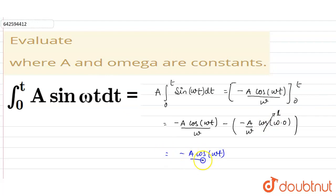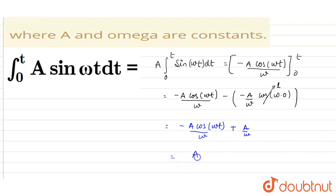plus A/ω. From here, take A/ω as a common, so A/ω × (1 - cos ωt).